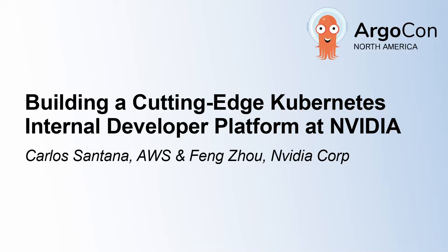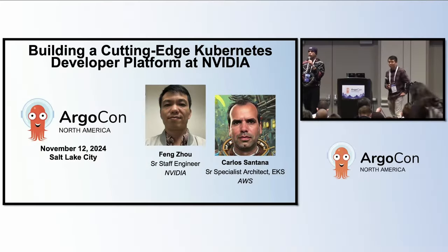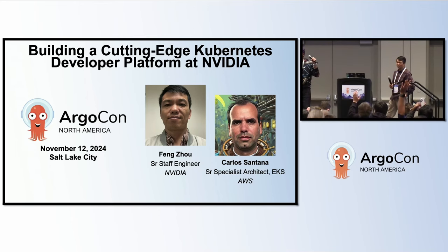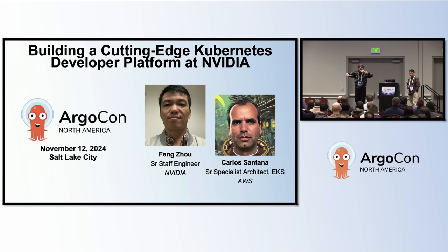Let's get started. People are coming in, but just before we start, let me ask a question because we haven't had any icebreakers. Who knows what's an Argo CD sync wave? So for the first time, the first ArgoCon, we're going to do the sync wave. Everybody will go from the beginning — the negative numbers, zero, and positive numbers. At the count of three, we'll do the sync wave.